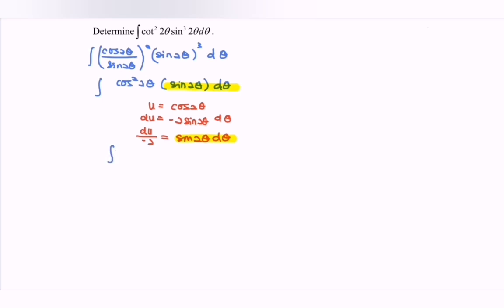The integral becomes u squared du multiplied by negative 1 over 2. Integrate this to get u to the power of 3 over negative 6 plus c.